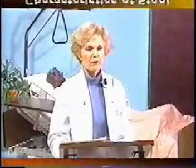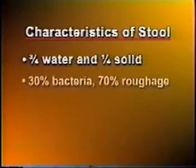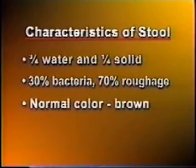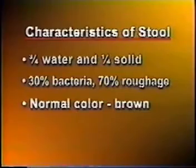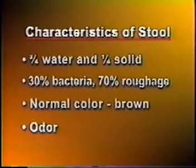There are some common characteristics of stool. Stool is about three-fourths water and about one-fourth solid material. It's composed of about 30% dead bacteria and 70% undigested roughage. The normal color of stool is brown, which comes from bile secreted by the gallbladder. The characteristic odor of stool is produced by the actions of intestinal bacteria found in the food we eat.